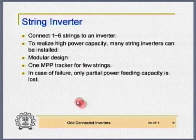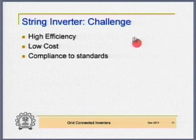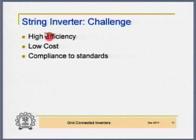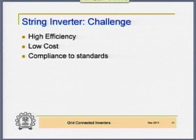Each group of 6 or 8 strings has one inverter, and there may be N such inverters. So if one inverter fails, only part of the capacity is lost — not the entire capacity as in the central inverter case. The challenges include: as the power rating comes down, maintaining efficiency becomes an issue. Also, low cost and compliance to standards — not only harmonics but also DC current injection to ground are issues.